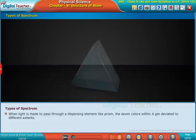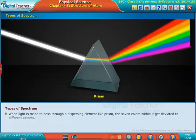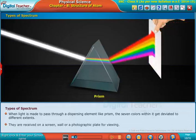Let us learn about the types of spectrum. When light is made to pass through a dispersing element like a prism, the seven colors within it get deviated to different extents. They are received on a screen, wall, or photographic plate for viewing.